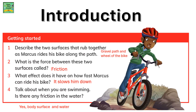Describe the two surfaces that rub together when Marcus rides his bike along the path. The two surfaces are the gravel path and the wheels of his bike. What is the force between these two surfaces called? It's called friction. What effect does it have on how fast Marcus can ride his bike? It slows him down.